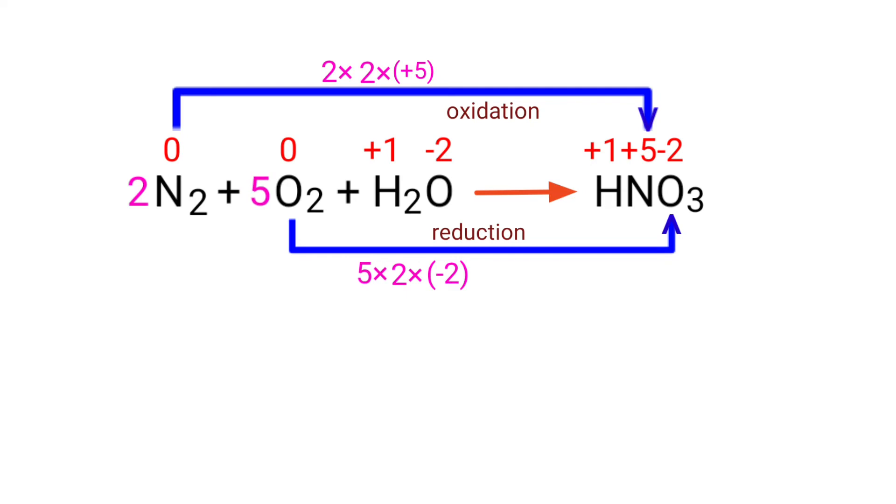Now you can write the equation as 2N2 plus 5O2 plus H2O which gives us HNO3.